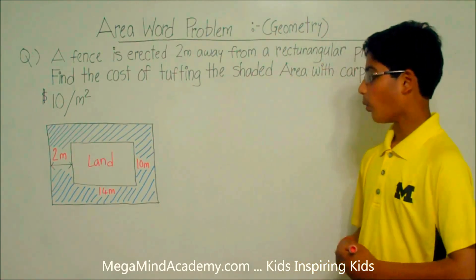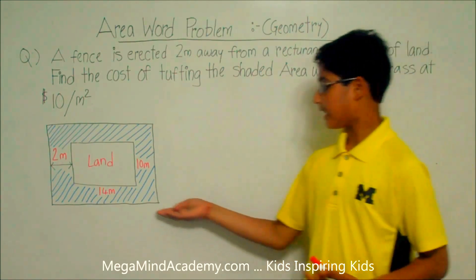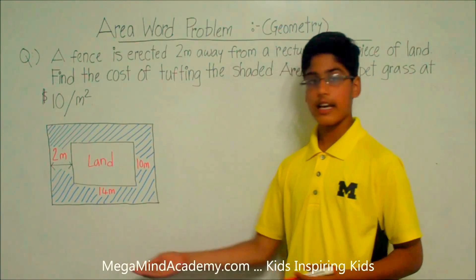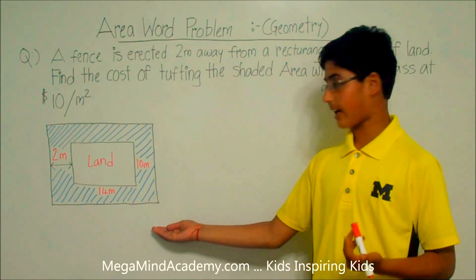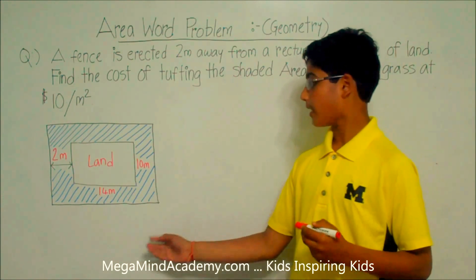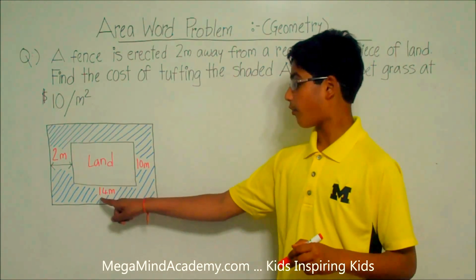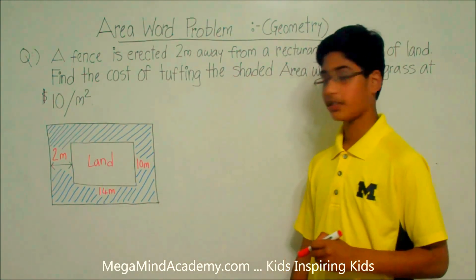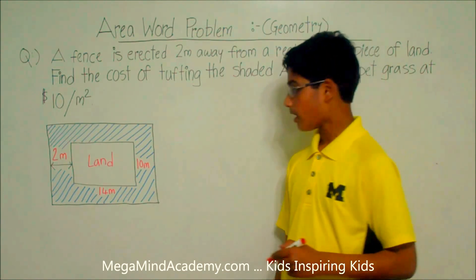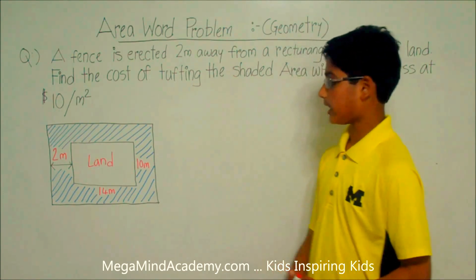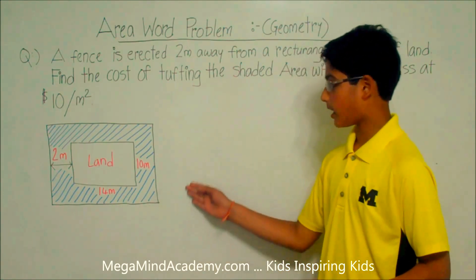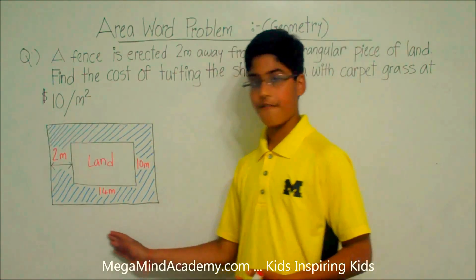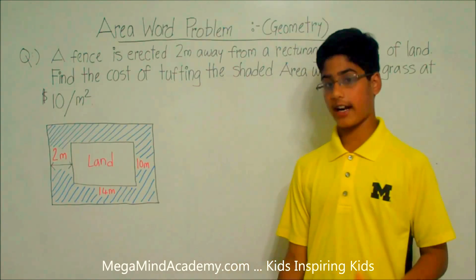Now we can see that we have a diagram here. In this diagram, there is a piece of land 14 meters by 10 meters. We can also see that we have a big rectangle, which is where the fence is erected.